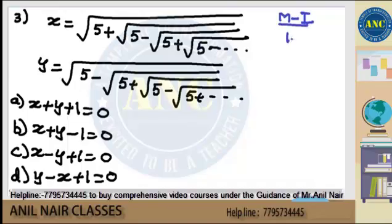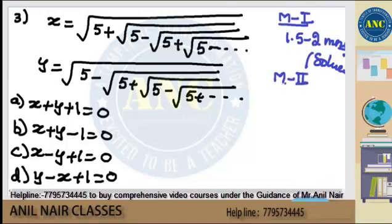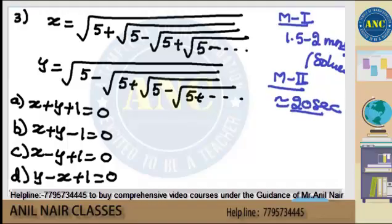Method 1 takes 1.5 to 2 minutes to solve the question. Method 2 is the ANC method. Listen carefully how I am solving the question — if you understand the approach, this question will take maximum 20 seconds to solve.